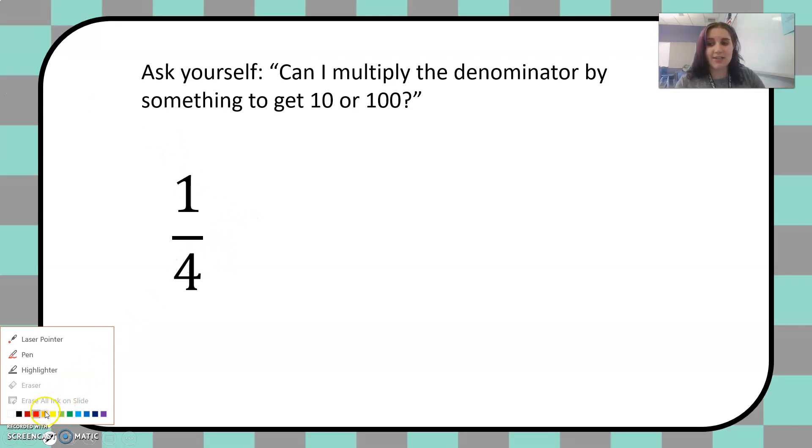So I start to think of money, quarters. Four quarters makes one dollar. So I know that four times 25 is 100. So I'm going to multiply the denominator by 25 and the numerator. Whatever you do to the bottom of a fraction you have to do to the top as well. So now we multiply across.